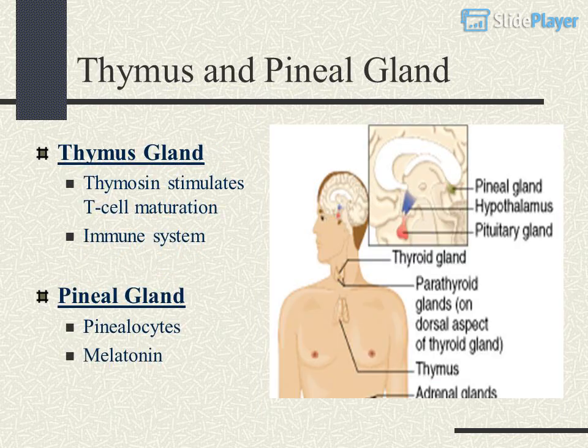Thymus gland produces thymosin and stimulates T cell maturation for the immune system. Pineal gland contains pinealocytes that produce melatonin.